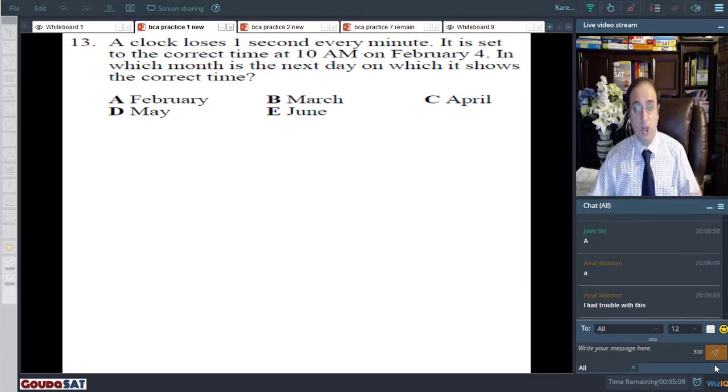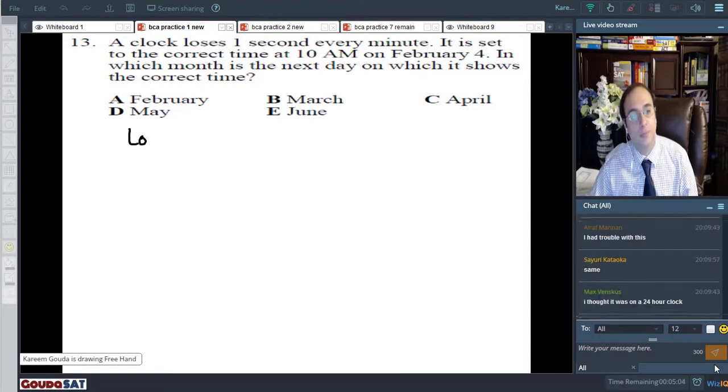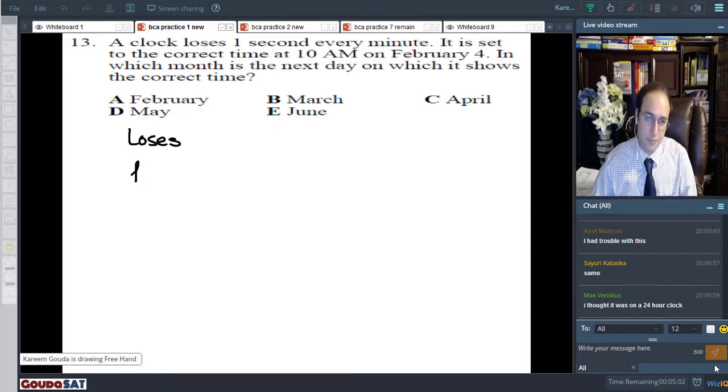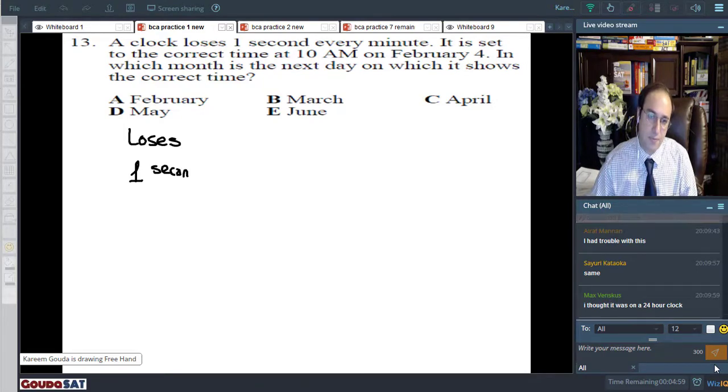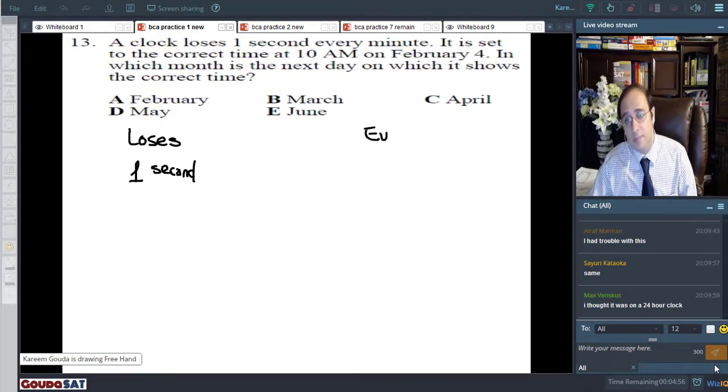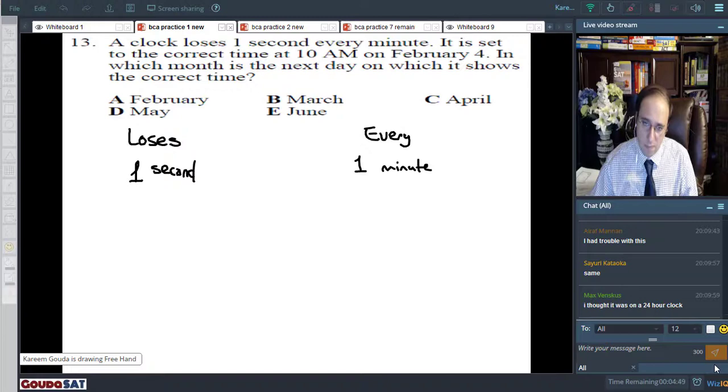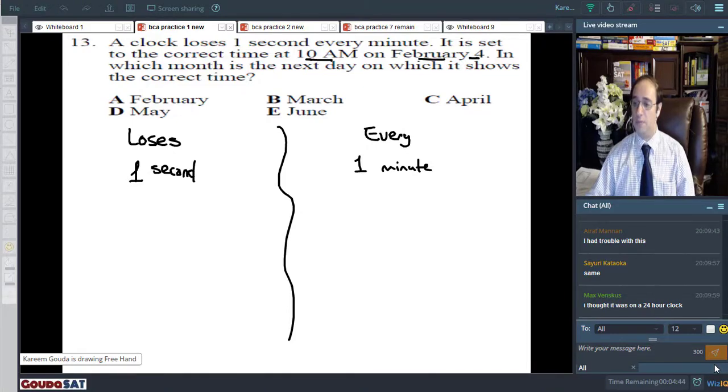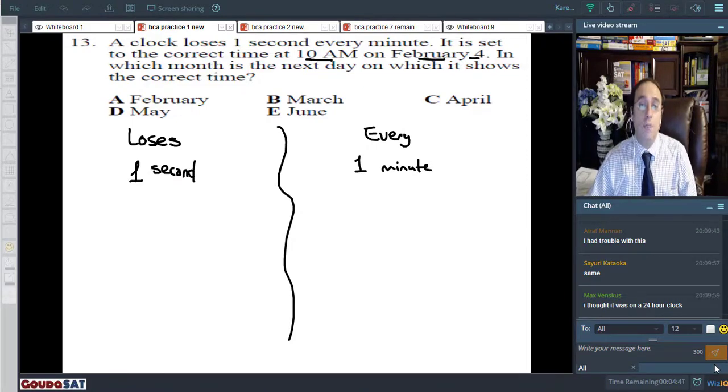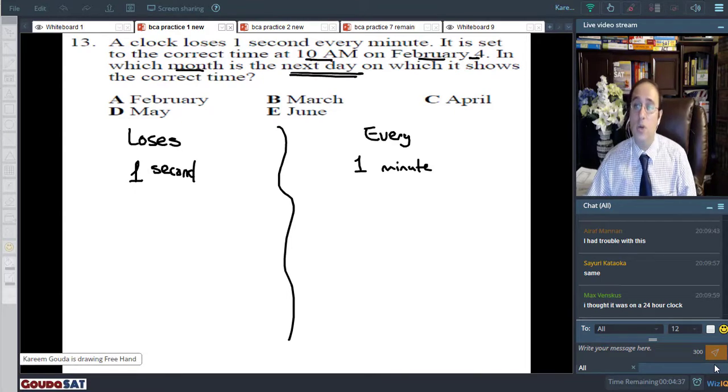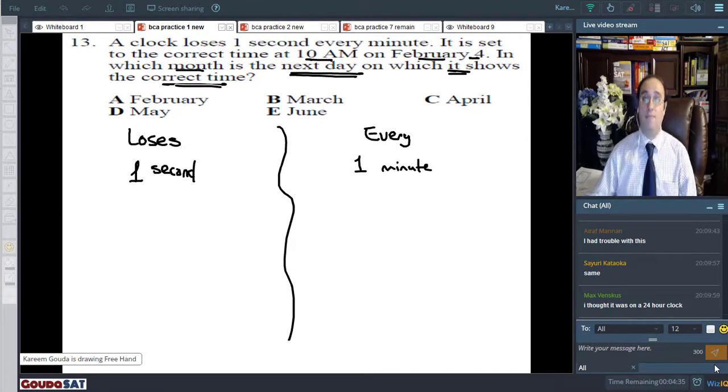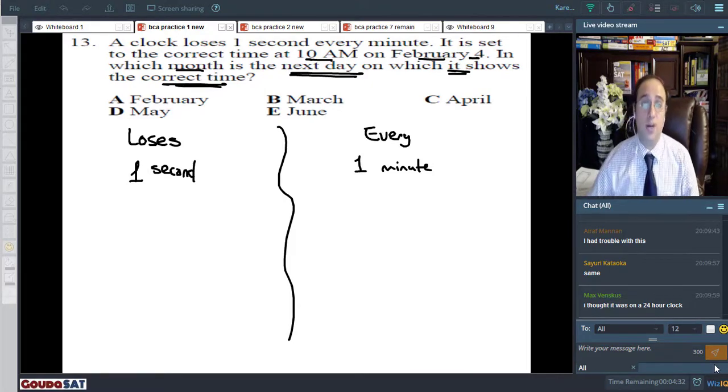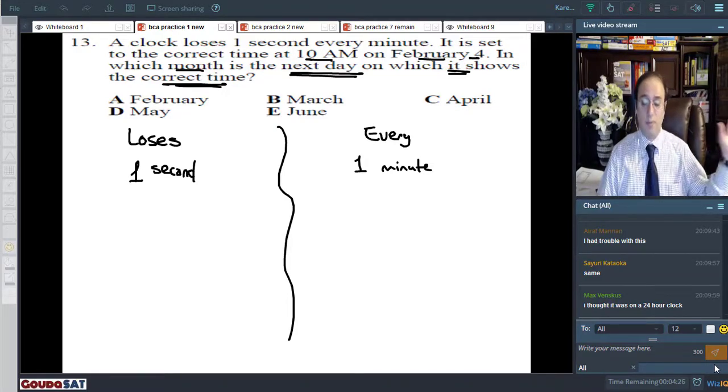Let's see. A clock loses one second. So I go, okay, loses one second. Pay attention, guys. Every minute. So every one minute. It is set to the correct time at 10 a.m. on February 4th. In which month is the next day on which it shows the correct time? Now, here's a little tip for you guys. Even though you are a little bit old for this tip, this is something you should have learned a very long time ago. But let me just say it.